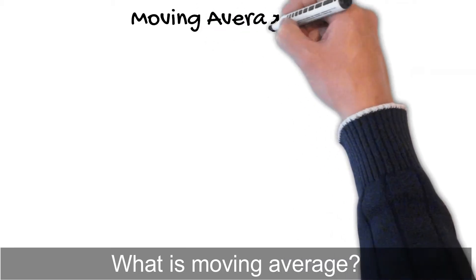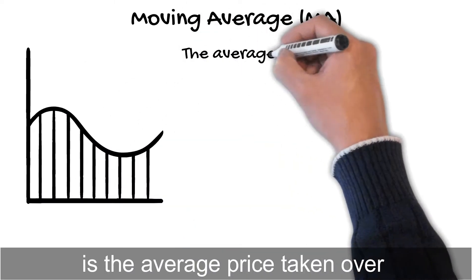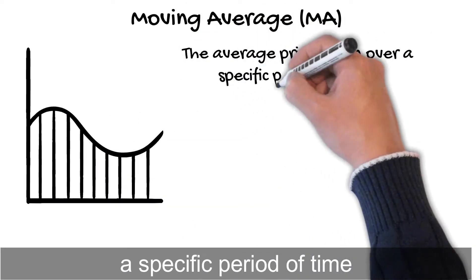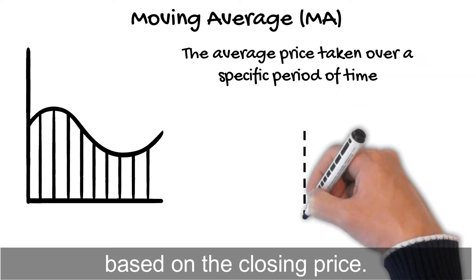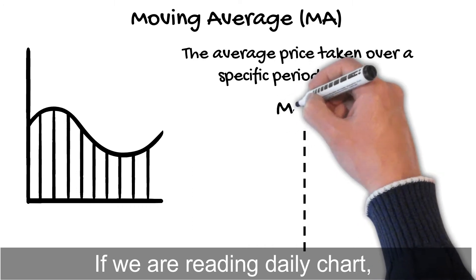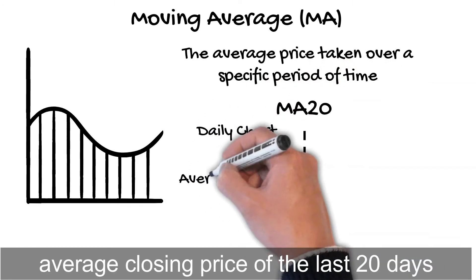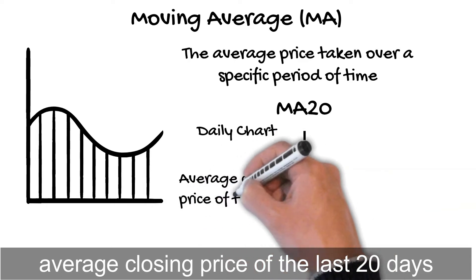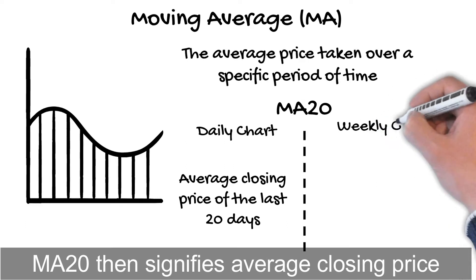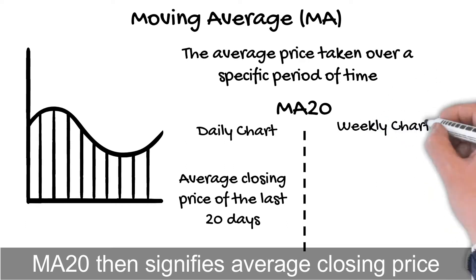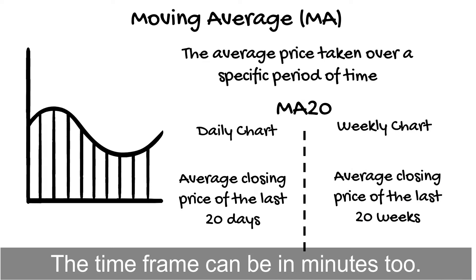What is moving average? The moving average, or MA, is the average price taken over a specific period of time. Most moving averages are computed based on the closing price. If we are reading a daily chart, MA20 means the average closing price of the last 20 days. If we are reading a weekly chart, MA20 then signifies the average closing price of the last 20 weeks. The time frame can be in minutes too.